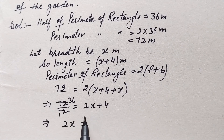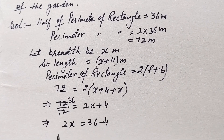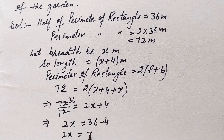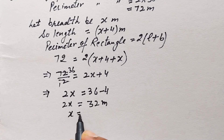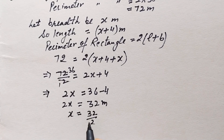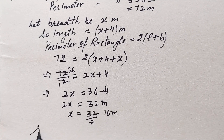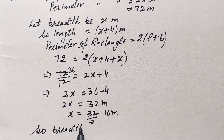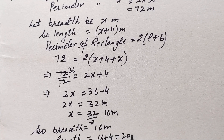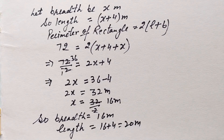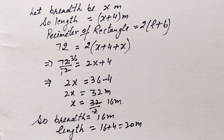So 2x equals 36 minus 4, which gives 2x equals 32 meters. Therefore x equals 32 over 2, that is 16 meters. Since x is breadth, breadth equals 16 meters. Length is 4 more than breadth, that is 16 plus 4 equals 20 meters. This way we find the dimensions of the rectangular garden. Thanks for watching.